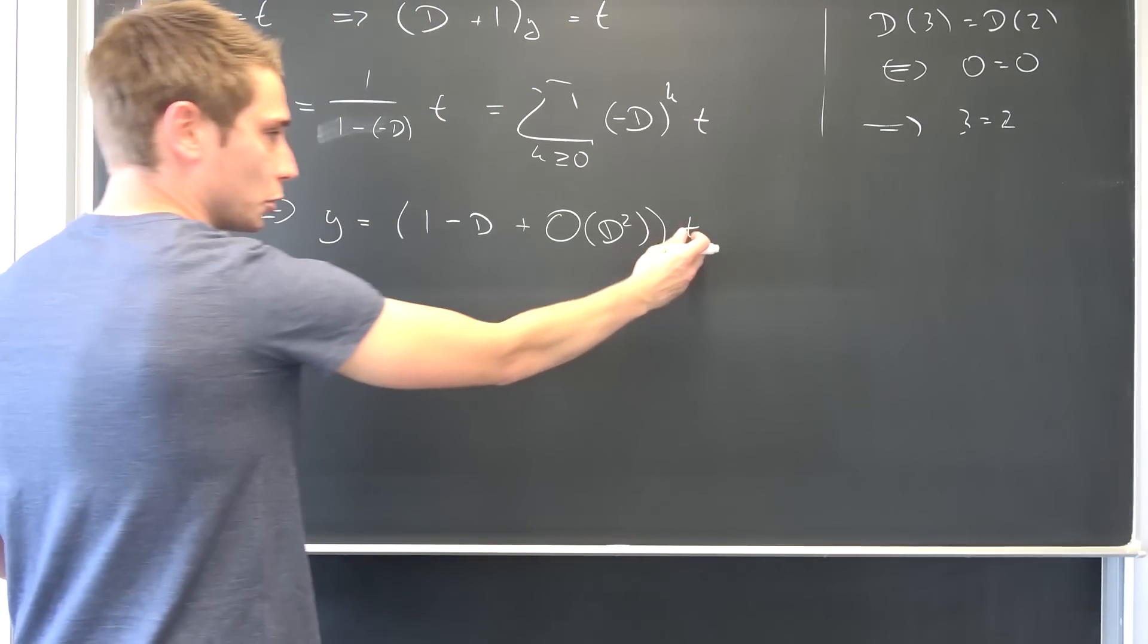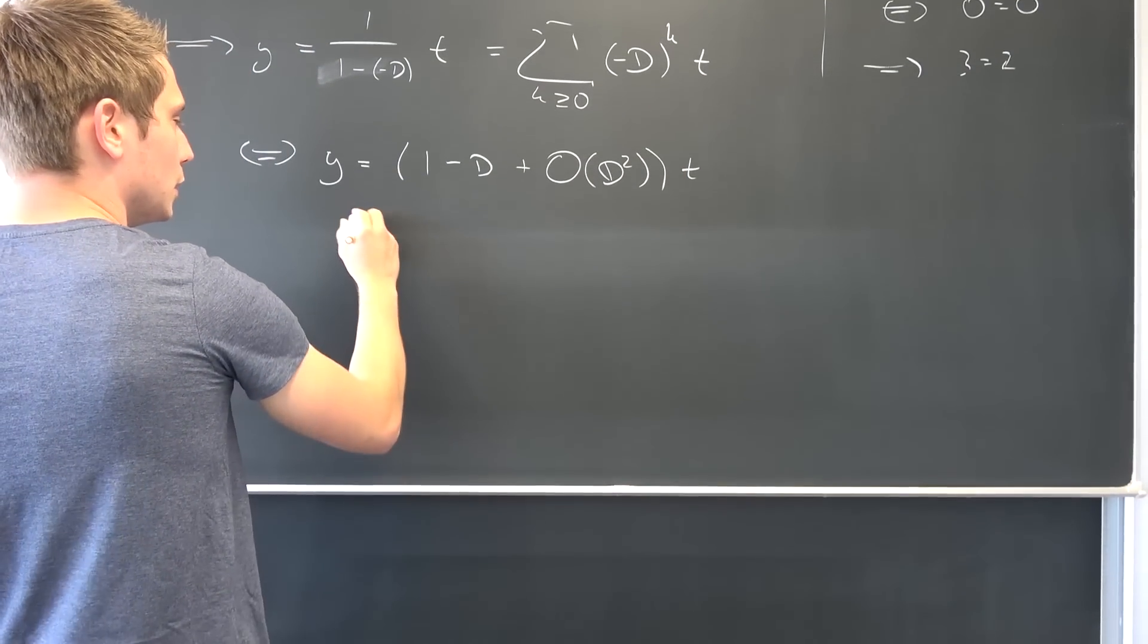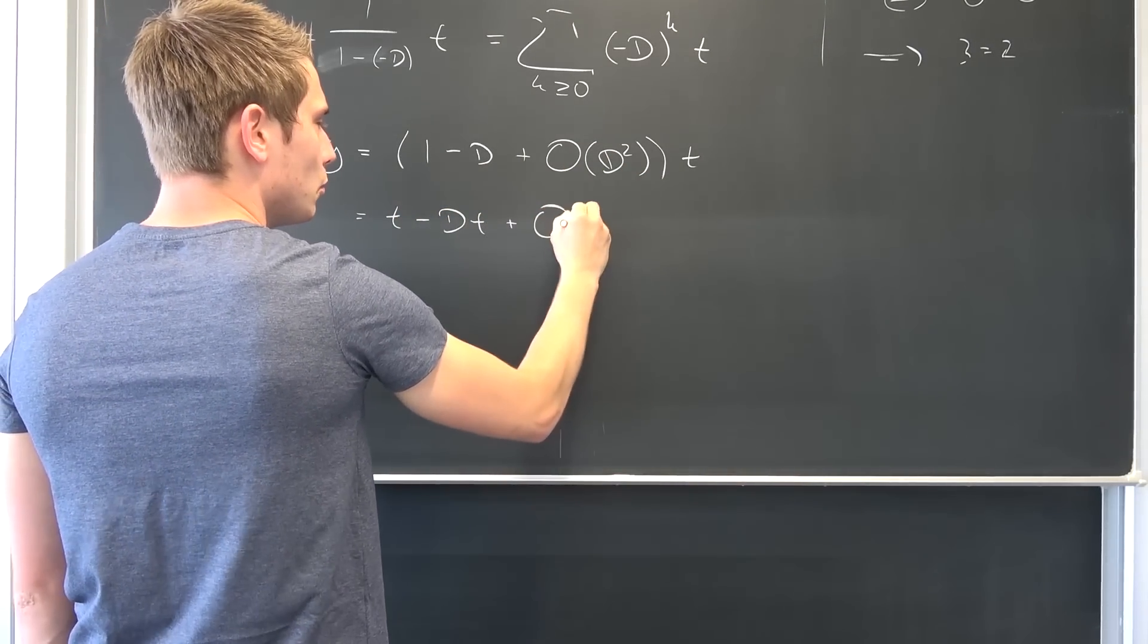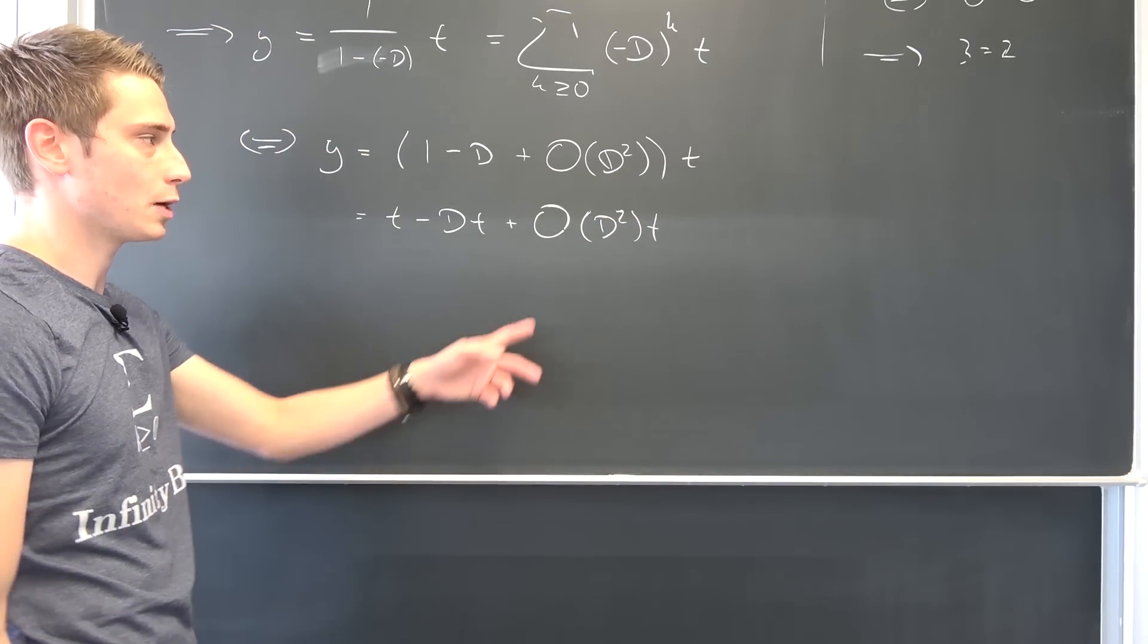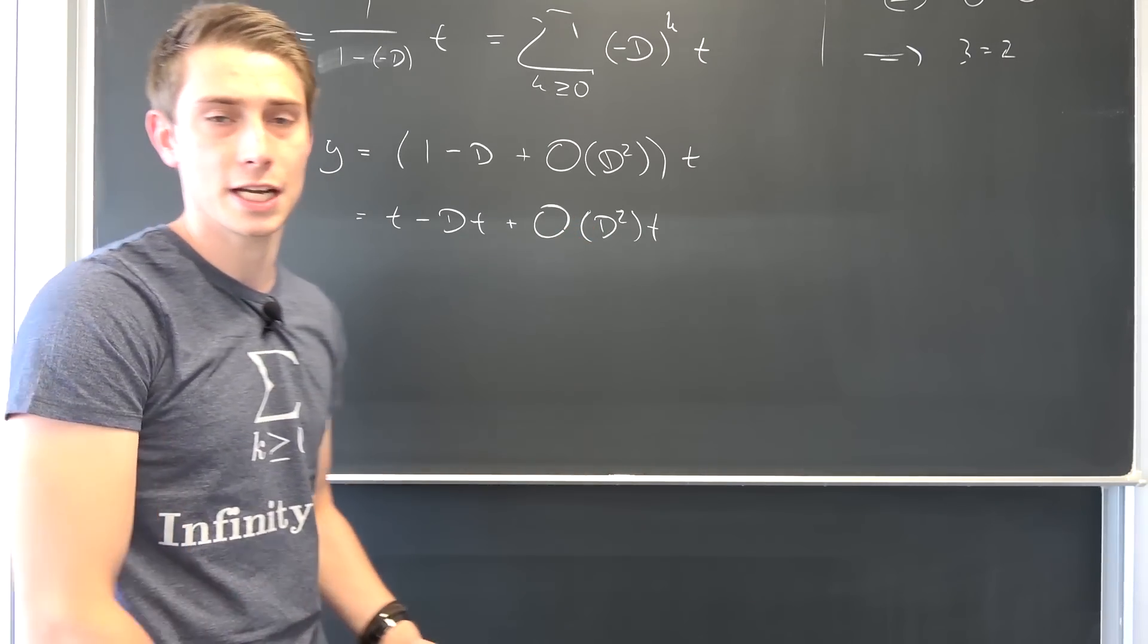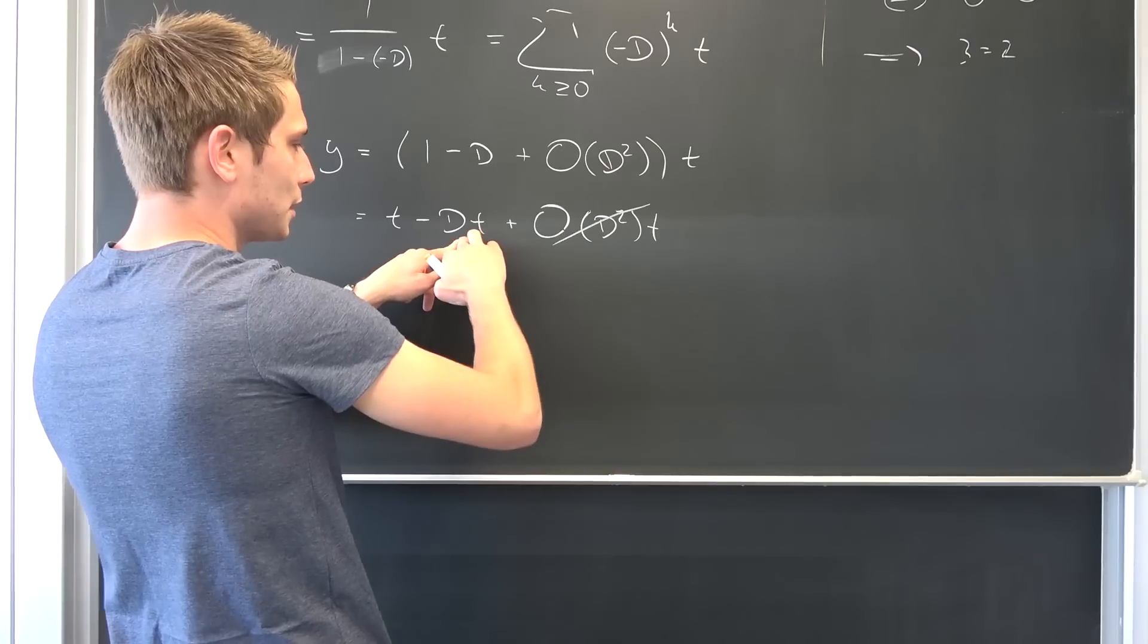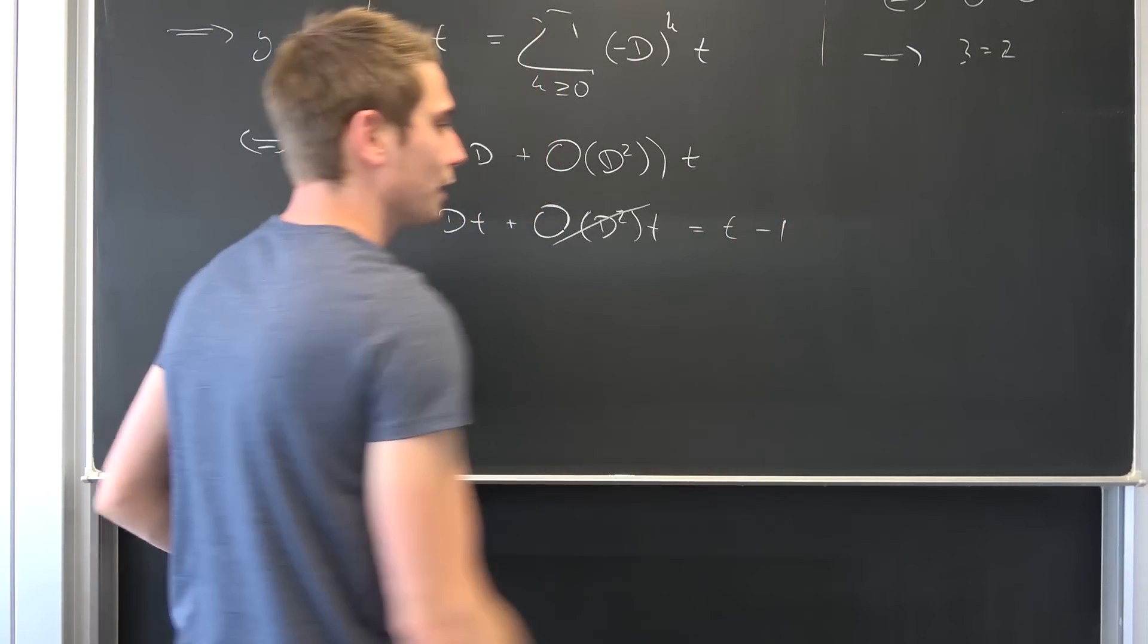Now we can multiply the t into here, we can distribute it. Distributive laws hold in the real complex numbers and all the other numbers too. So we are going to have t minus Dt plus O of D squared of t. And now you can probably see why this right here doesn't really matter, why I've written it that way. If you differentiate t twice or more, it's going to result in zero. So all of this is zero, this right here is nothing but Dt is 1, resulting in t minus 1.